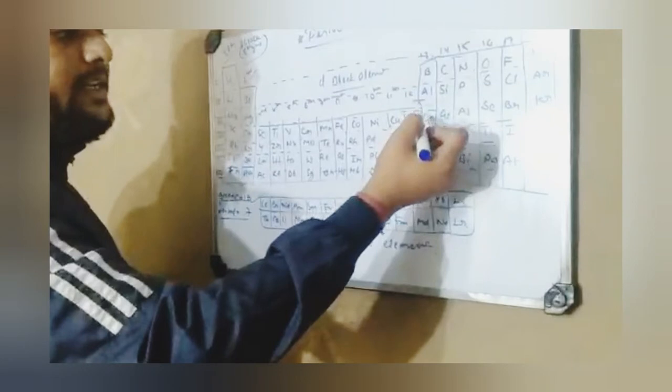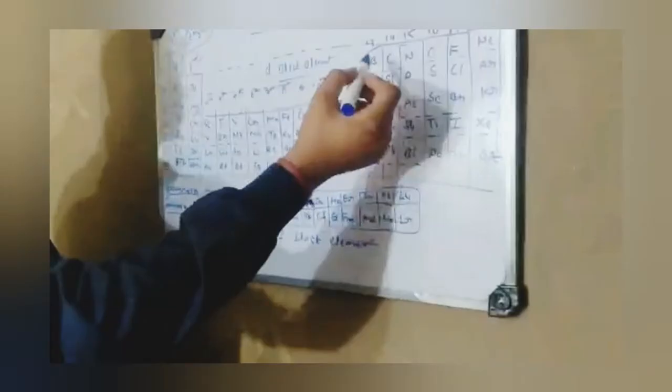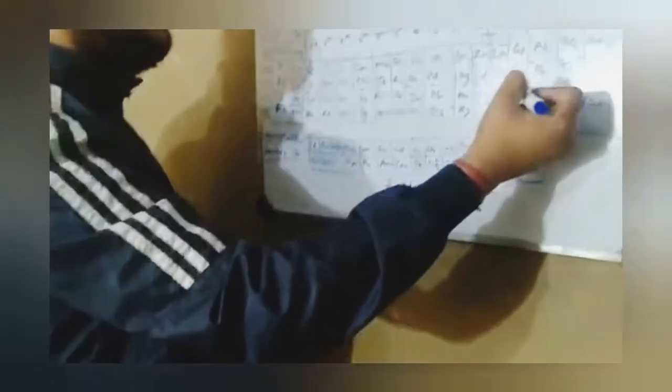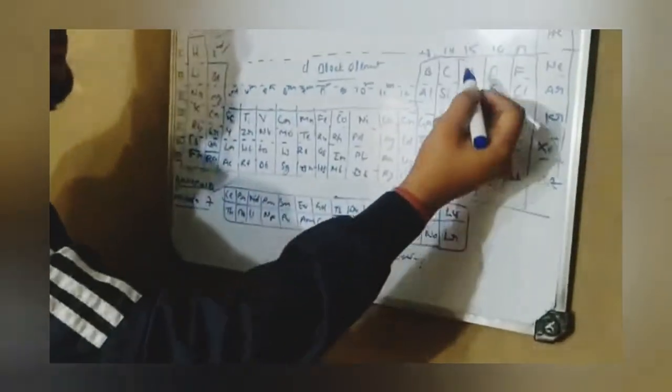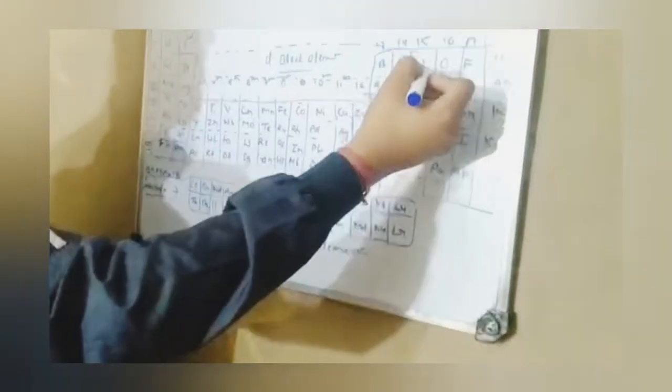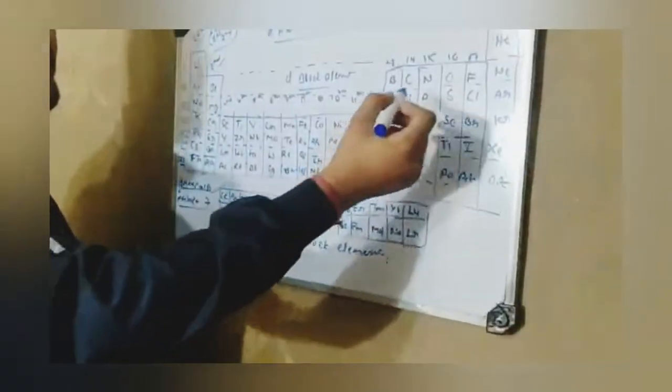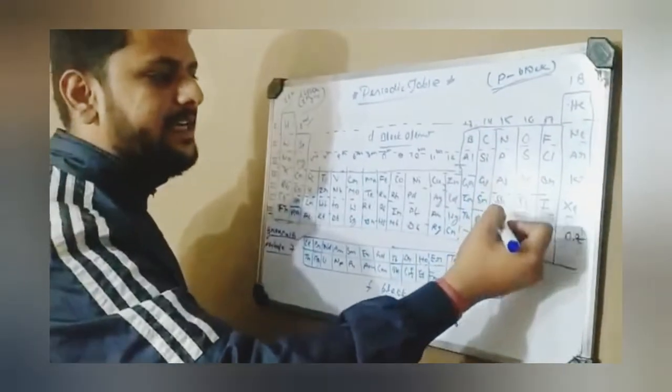We will talk about group 14 elements: Carbon, Silicon, Germanium, Tin and Lead. Now group 15 elements.